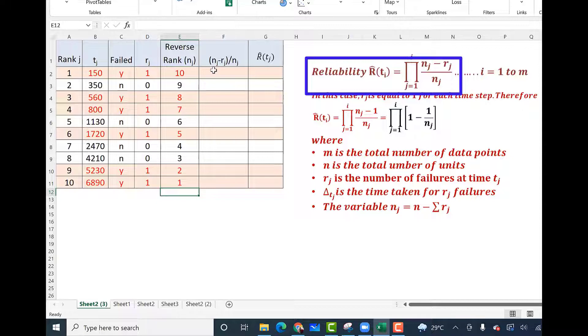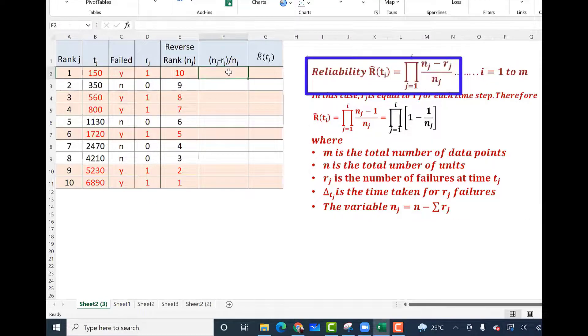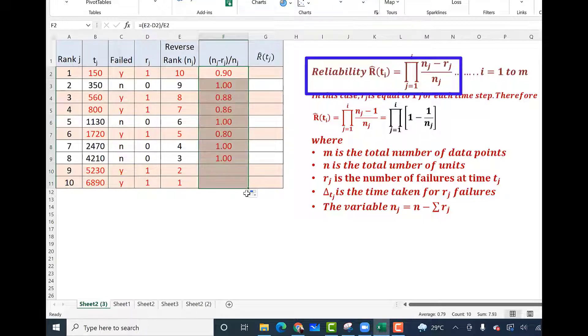Now we apply the formula nj minus rj upon nj. And these terms we have to multiply later. So let us calculate this term equal to nj is now the reverse rank minus rj divided by nj. And I calculate this for all 10 numbers. Only thing is that we can make this as blank, but we will do that later.